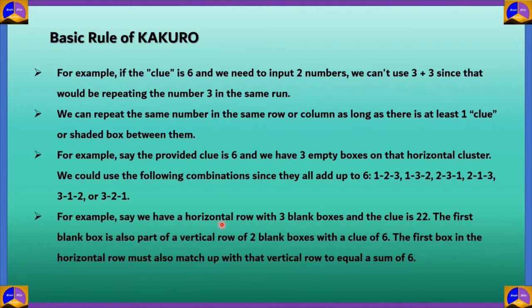For example, we have a horizontal row with three blank boxes and the clue is 22. And the first blank box is also a part of a vertical row of two blank boxes with a clue of 6. The first box in the horizontal row must also match up with that vertical row to equal a sum of 6. If you have a cell which is overriding two blocks, one horizontal and one vertical, then the number which we add must satisfy both blocks. Therefore, we have to be really careful in those cases.